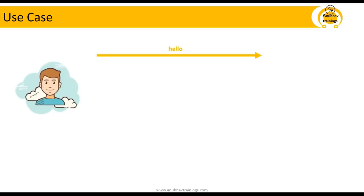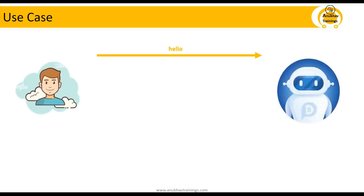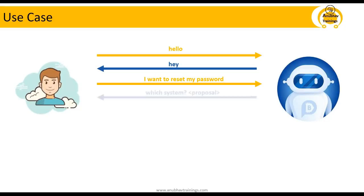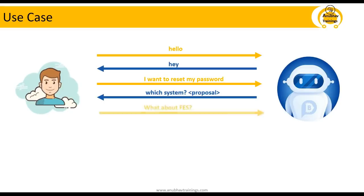Sam says hello and on the other side we have our robot — our chatbot. The robot first greets Sam: 'Hey, how are you?' Then Sam asks the next question: 'I want to reset my password.' The robot understands the phrase with the help of the natural language processing engine, which is part of conversational AI. The robot understands what Sam wants to do and responds with system proposals, making Sam's life much easier. Sam can choose from the proposed systems or provide the system name directly in the chat window.